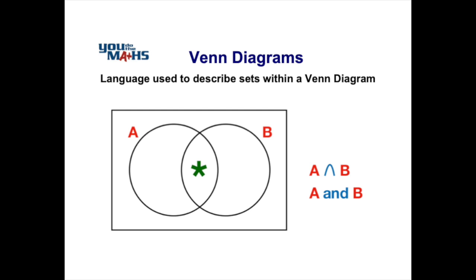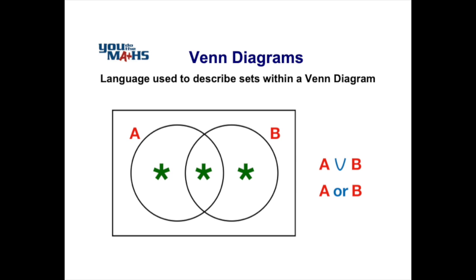Another form of notation is A union B, sometimes referred to as A or B, specifically the inclusive or. That refers to all the elements that are in set A, set B, and also where they overlap.